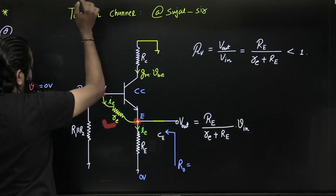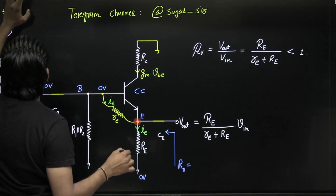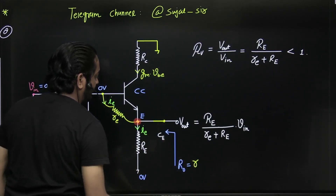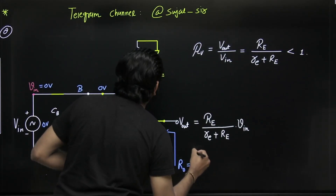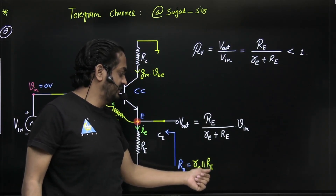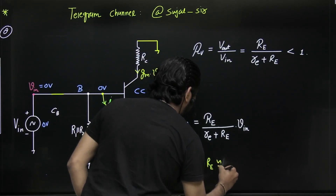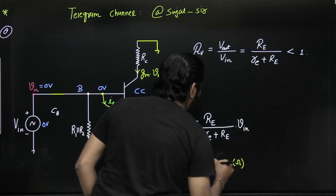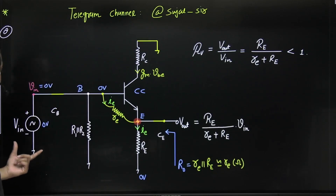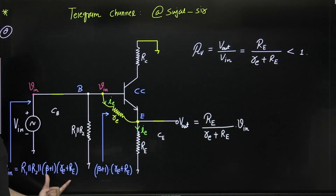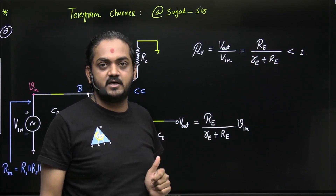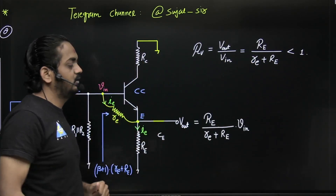The output impedance will be small re ∥ capital RE. If capital RE is much greater than small re, then the output resistance is approximately small re, which is in ohms. So the common collector configuration gives very small output impedance (in ohms) and very large input impedance (in hundreds of kilo-ohms), with a voltage gain of approximately one - making it act as a voltage buffer circuit, used for impedance matching.